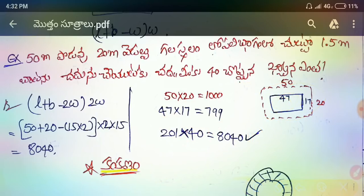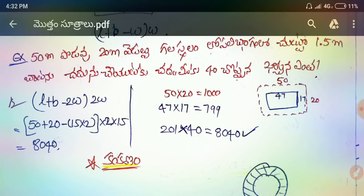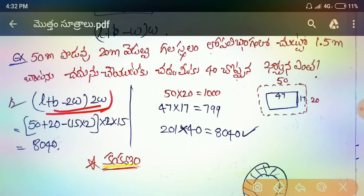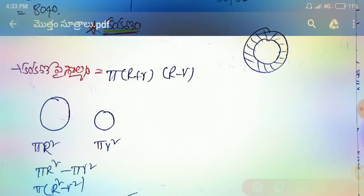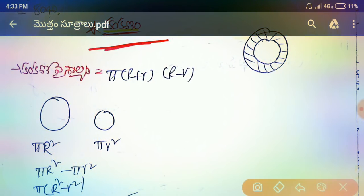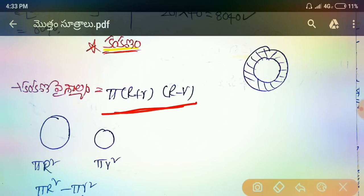If you don't know how to do this, then you can do it a little bit, because there is a lot of time. If you look at it, then you can do it a little bit. Kankana weisala: pi × r × r, r minus r.